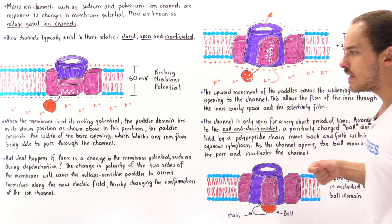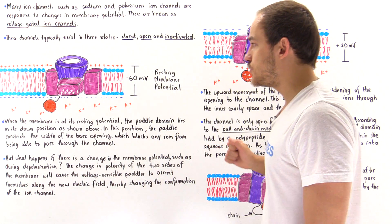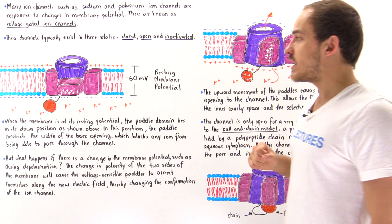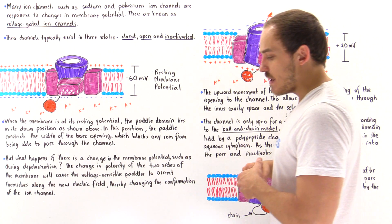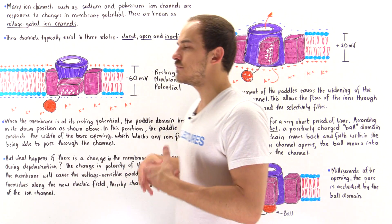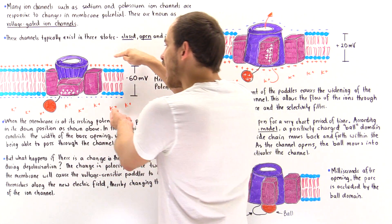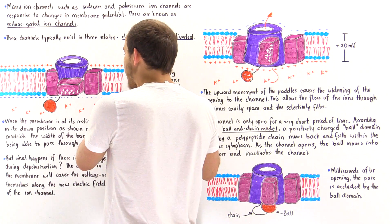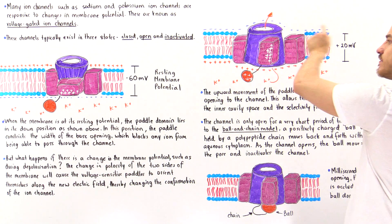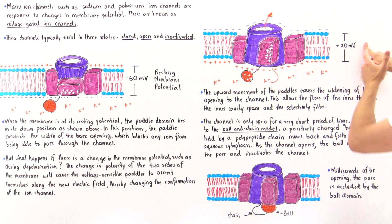This blocks any ion from passing through the selectivity filter inside the purple region. Now, what happens if we change the resting membrane potential of that cell membrane? Suppose we undergo depolarization — we change the polarity of that membrane. So instead of having negative charges on the inside and positive charges on the outside, we go from negative 60 millivolts to positive 20 millivolts.